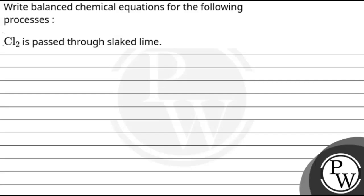Hello guys, that's the end of the question. The question states that write balanced chemical equation for the following process: Cl2 is passed through slaked lime.